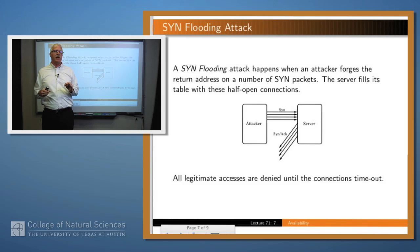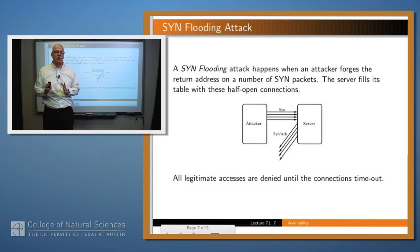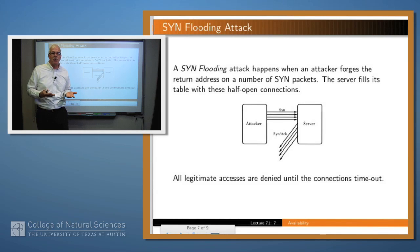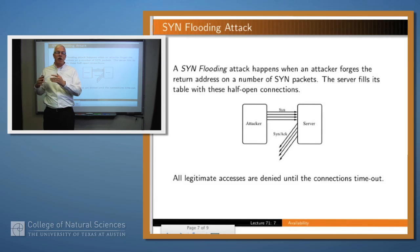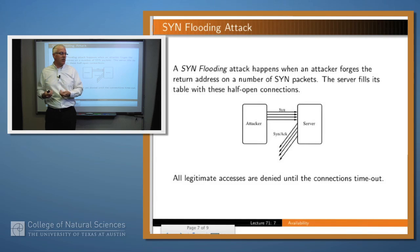In the SYN flooding attack, an attacker sends synchronization packets to the server with forged or illegitimate return addresses. The server allocates space in its internal table for these connections and then sends back the appropriate response. But since the return address is illegitimate, the response goes off somewhere unknown, and the server sits and waits. Eventually the connection times out and those entries are discarded. In the meanwhile, these half-open connections fill up the server's table, and if there are enough of them, there is no room for legitimate clients to make a TCP connection. This is what's called a SYN flooding attack.